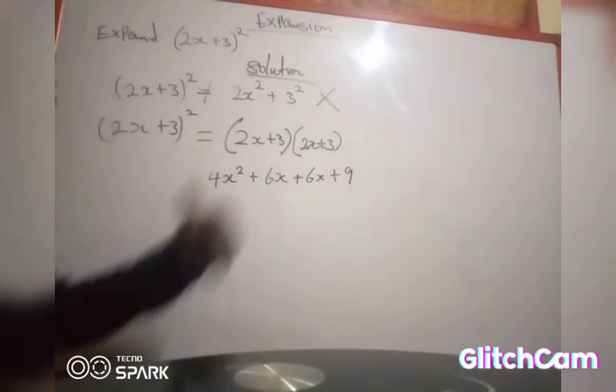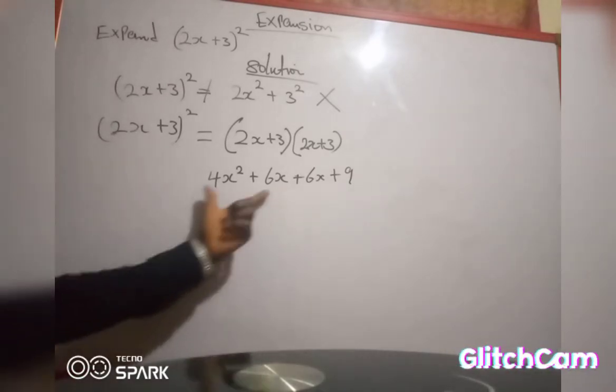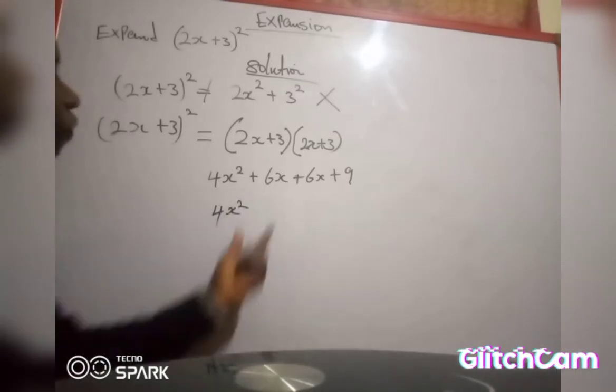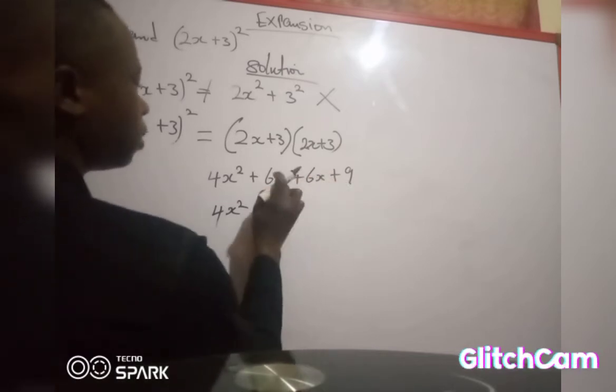So we have successfully opened this bracket. The now is to collect the like terms, to arrange this equation. 4s squared, if you look at this, 6s and 6s here they have the same common term, they have the same variable.